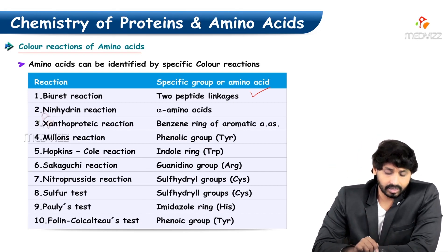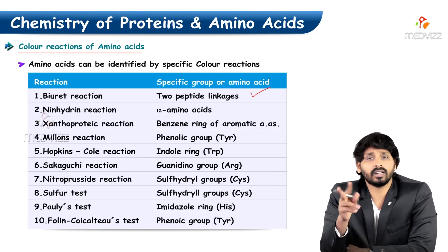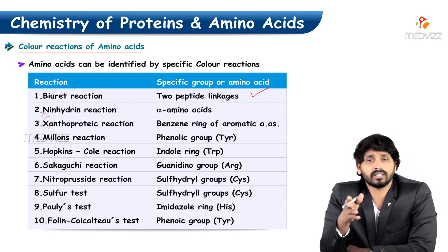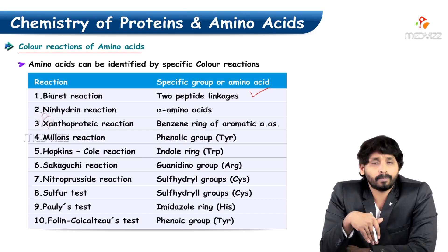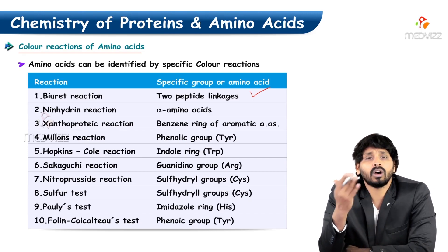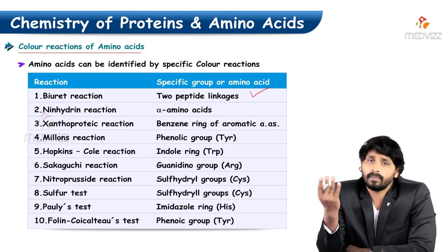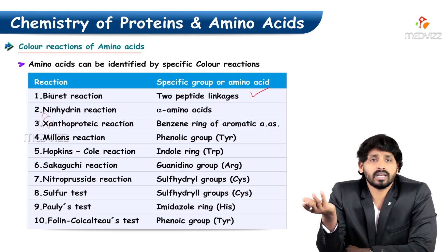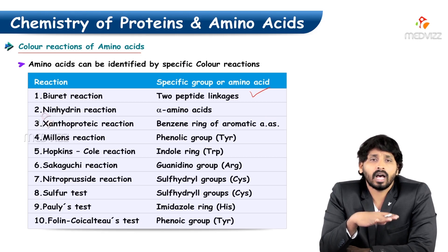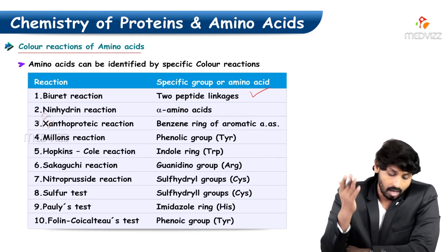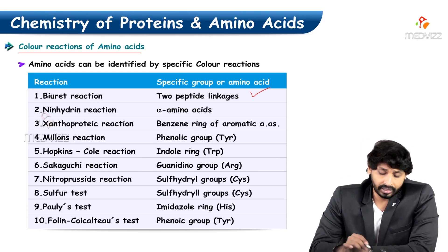The ninhydrin reaction: there are two classifications — alpha amino acids and other amino acids. The ninhydrin test gives a positive result — Ruhemann's purple — for alpha amino acids. If the result is yellow, they are amino acids but not alpha amino acids.